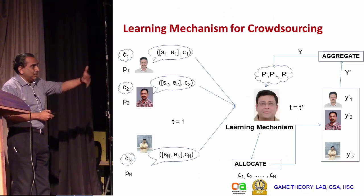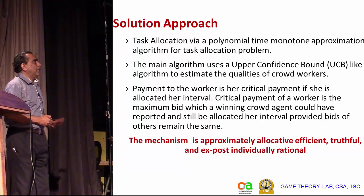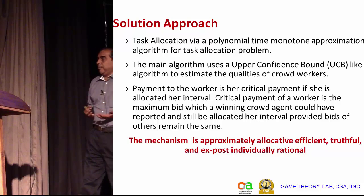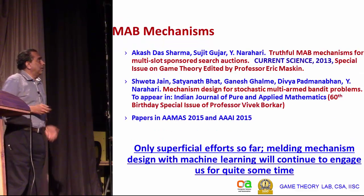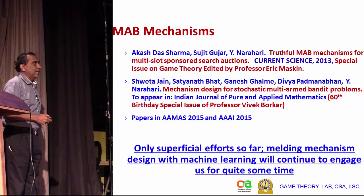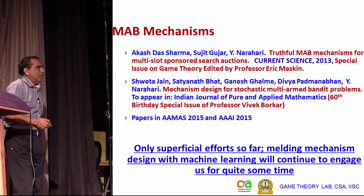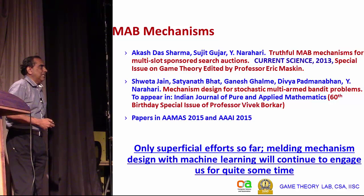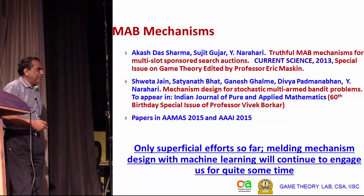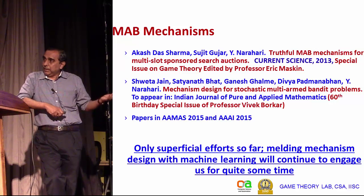This gives an idea of how such a learning mechanism may look like. What we have done is propose what we call multi-arm bandit mechanisms. We published our first paper in a Computer Science journal in 2013—it was a special issue on game theory edited by Nobel laureate Professor Eric Maskin. More recently, we have a survey paper on mechanism design for stochastic multi-arm bandit problems appearing in the Indian Journal of Pure and Applied Mathematics, and papers at AAMAS 2015 and AAAI 2015 on MAB mechanisms applied in the crowdsourcing setting.